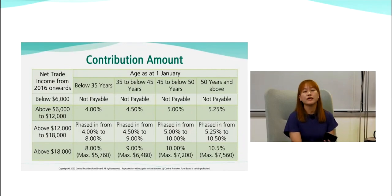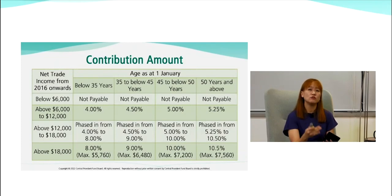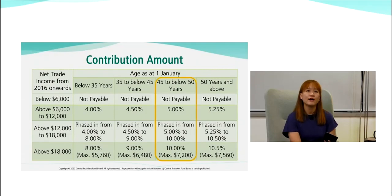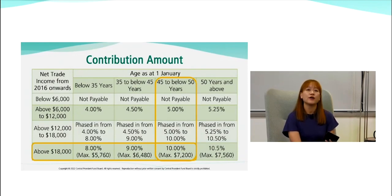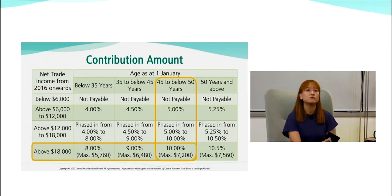How much do we contribute? The amount is calculated based on your NTI and your age. If your NTI is below $6,000, you will not be required to make CPF MediSave contributions. For example, for someone aged 45 to below 50 earning net trade income above $18,000, the MediSave contribution rate is 10% of NTI, kept at a maximum of $7,200. The percentage differs depending on age and NTI.